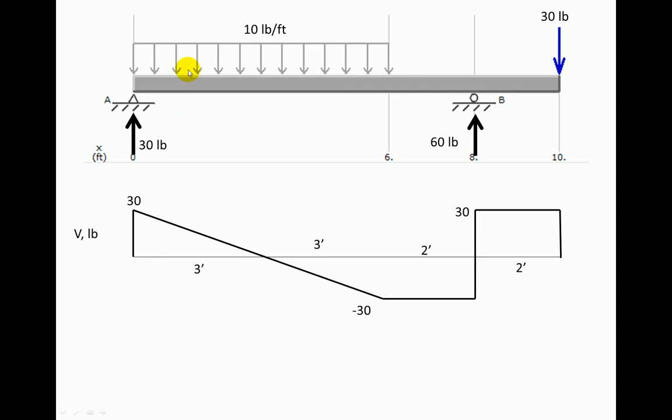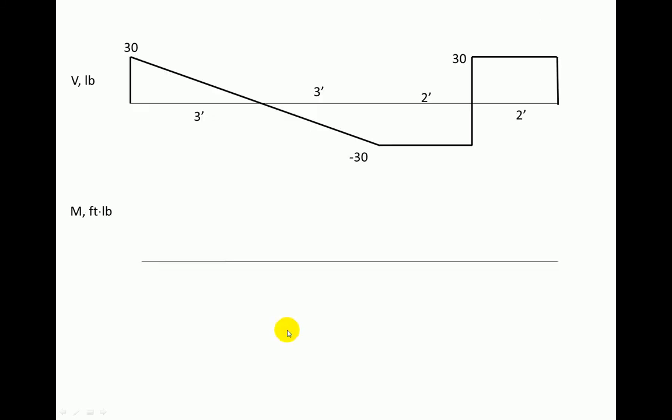Because there are no couples, no external moments in this problem, everything we need to draw the moment diagram is contained within the shear diagram. Once again, we'll start at 0, and now we're going to come upwards, and the amount that we're going to come upwards is the area under the shear diagram. The positive area that we have is going to be 45 foot-pounds, just the area of that triangular region there. So we're going to start at 0 and end up at 45.